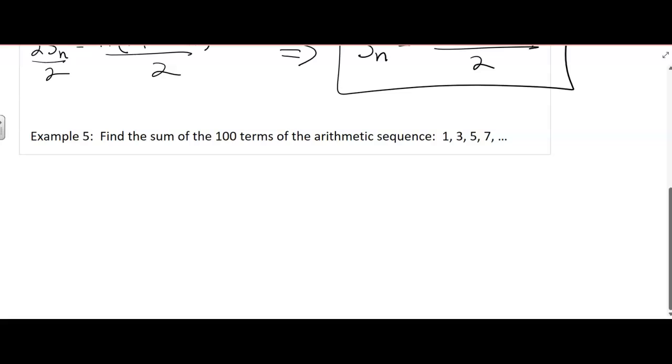So they have a different sequence for us. Example 5: Find the sum of the 100 terms, I think they mean the first 100 terms, of the arithmetic sequence 1, 3, 5, 7...